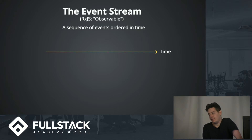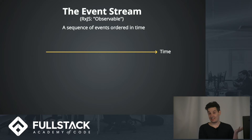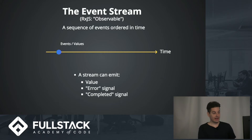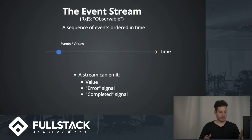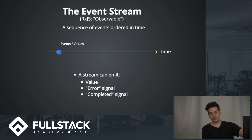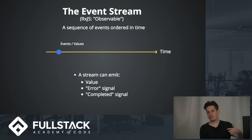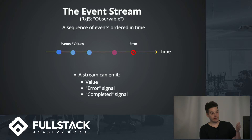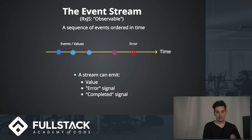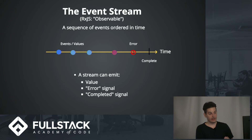Functional reactive programming centers around the event stream. An event stream is a sequence of events ordered in time. You can almost think of it as an array with the added dimension of time — you're getting values at different points in time. This is what's called a marble diagram. Each one of these circles is an event; the axis is time. A stream can emit a value, a stream can emit an error signal, and finally a complete signal.